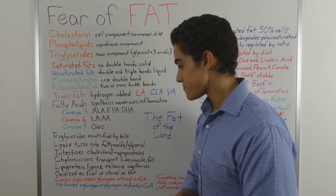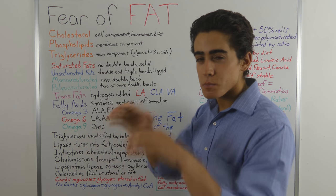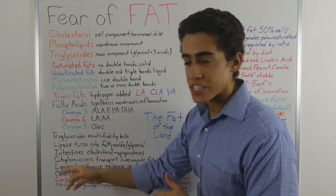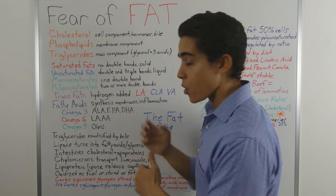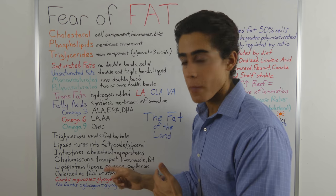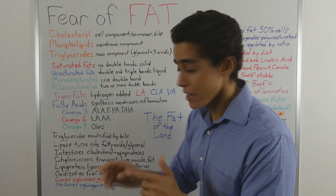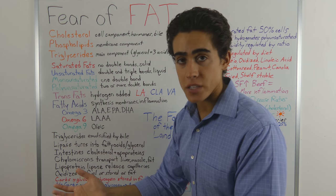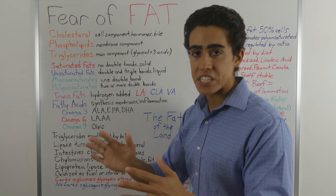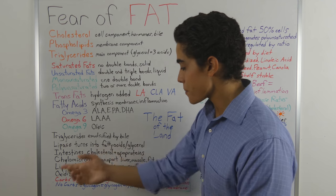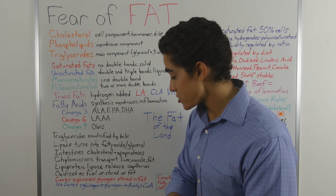So how do we actually absorb these fats? Triglycerides become emulsified by bile, which broadens the surface area and allows the fat-digesting enzyme lipase to break down these triglyceride molecules into glycerol and fatty acids. Once broken down, the intestines absorb it. After absorption, it combines with cholesterol and apoproteins to form chylomicrons. Chylomicrons transport fat around the body — to the liver, to muscle cells, to fat cells. Another enzyme, lipoprotein lipase, is released in the capillaries, causing the fat to be released where it can be used as energy or stored as fat.